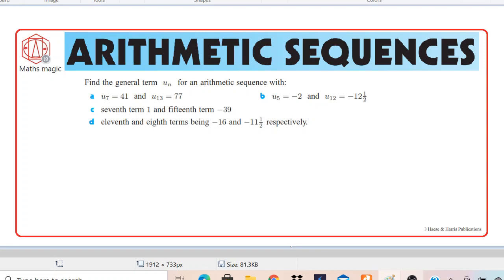We have a question on the screen. It says find the general term UN for an arithmetic sequence with different parts. We have to find the nth term of a particular sequence or general term or general formula of the sequence. I will solve one question for you and you can try the rest of the questions.